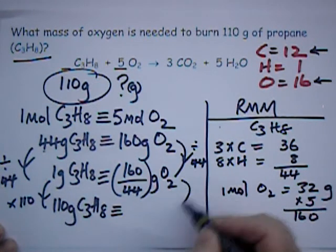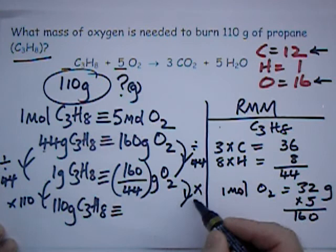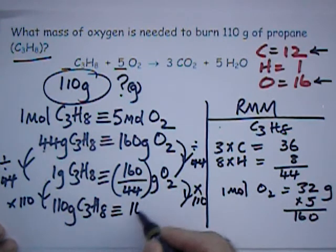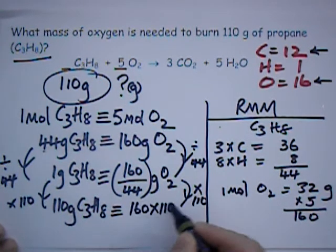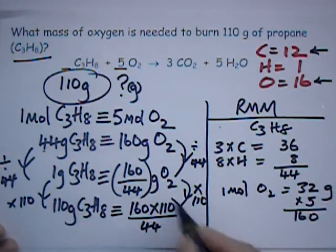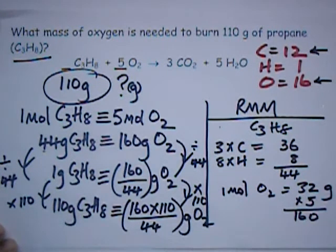What you do to one side, you must do to the other. So I'll multiply this by 110 as well. That's 160 times 110, divided by 44. And that'll give me the grams of oxygen required.